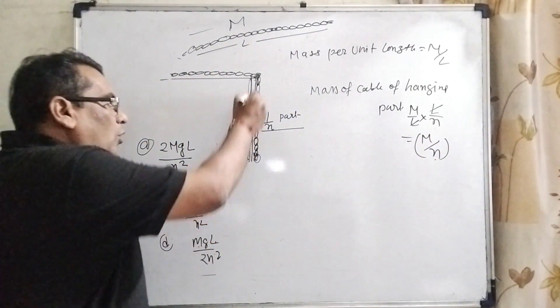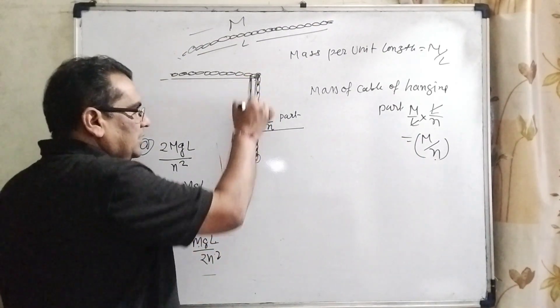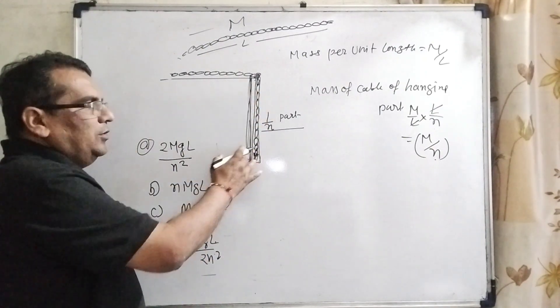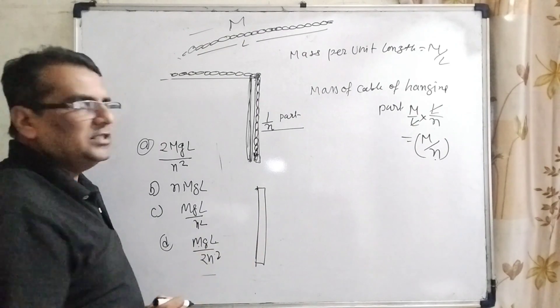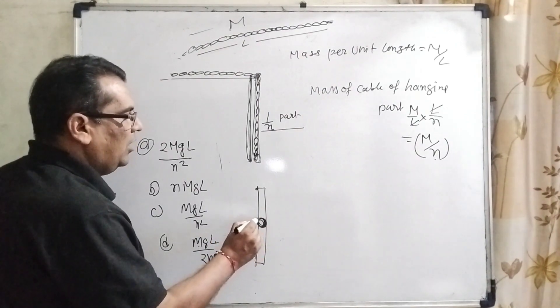Now whole mass is concentrated at the center of mass of this hanging cable. So here you know that very well: any rod you have given, where is the center of mass? Center of mass is exactly in the middle of this rod.